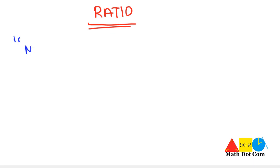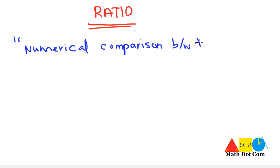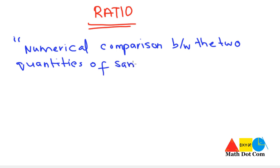Ratio is basically defined as a numerical comparison between two quantities of the same kind. This means a comparison based on numbers, and we must have two quantities for the comparison to be made. They should be of the same kind — their units should be the same — so that their ratio can be found.